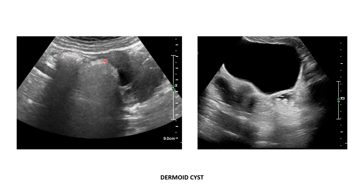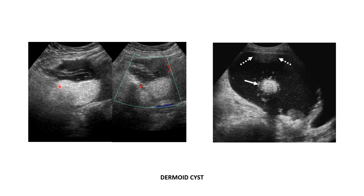There are two areas of bright components with shadowing in this patient, and this is typically fat echogenicity inside the left ovary. Large areas of bright echogenicities with linear echogenicities inside the cystic component. This is an old but good example with floating fat inside the cyst — this is not a reverberation artifact. This is fat floating in the upper part of the cyst. There are also some other components.